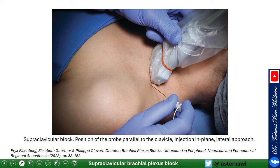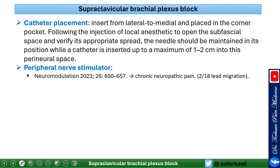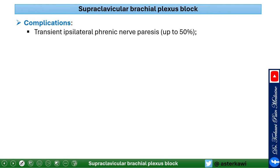Position the patient and probe appropriately. For catheter placement, insert from lateral to medial into the corner pocket, inject local anesthetic to open the subfascial space, and confirm appropriate spread. Maintain the needle position while inserting the catheter approximately one to two centimeters into the perineural space. Peripheral nerve stimulator use has been reported for chronic pain and brachial plexus injury in the chronic pain setting. Complications include transient ipsilateral phrenic nerve block, which still occurs but at a lower rate than with interscalene.